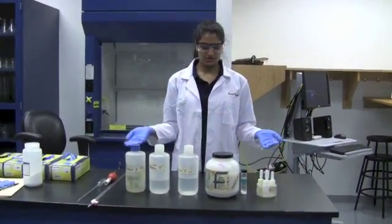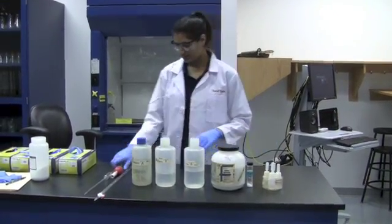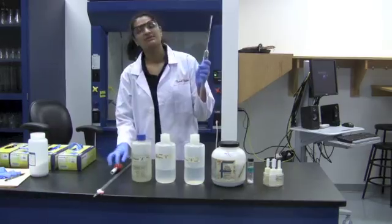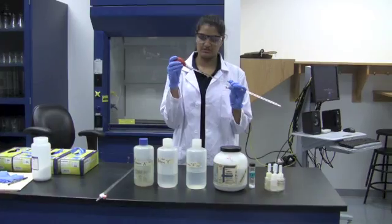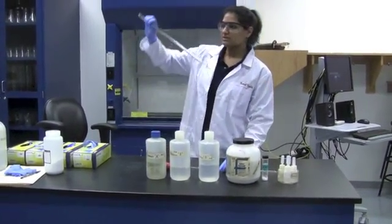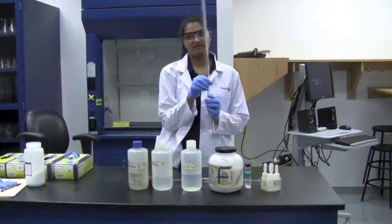These are the supplies you're going to be using in this week's experiment. You're going to be using a 25 milliliter pipette, as well as a bulb that you're going to use to draw out the solution. You're also going to be using a burette for the titration.